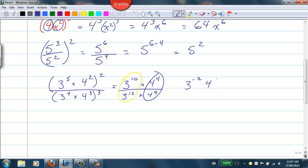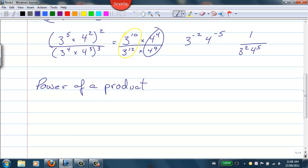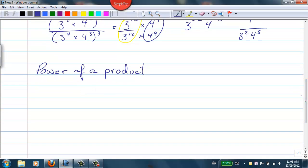Notice our bases are the same with the 3's and the 4's now. So with the 3's, I can go 10 minus 12, subtract the exponents to get 3 to the negative 2. 4 minus 9 to get 4 to the negative 5. And if I want to express that with positive exponents, like we learned previously, we get 1 over 3 squared and 1 over 4 to the fifth.